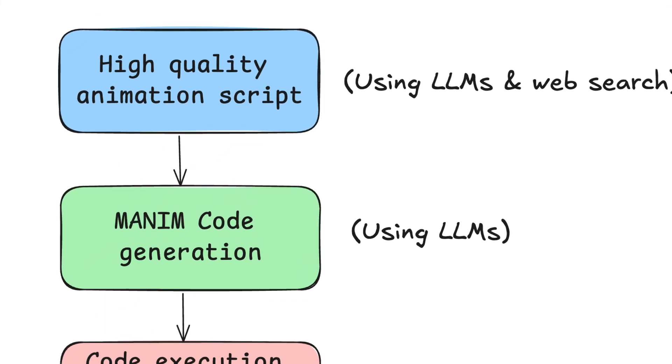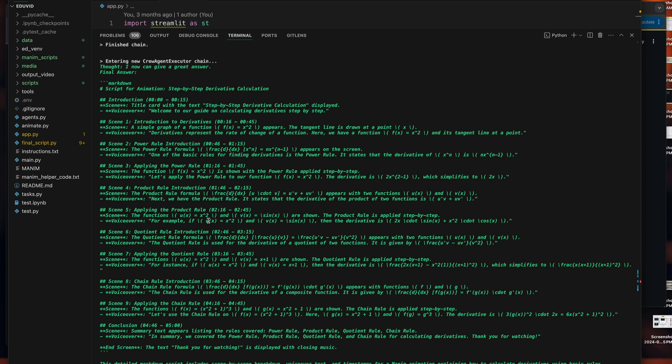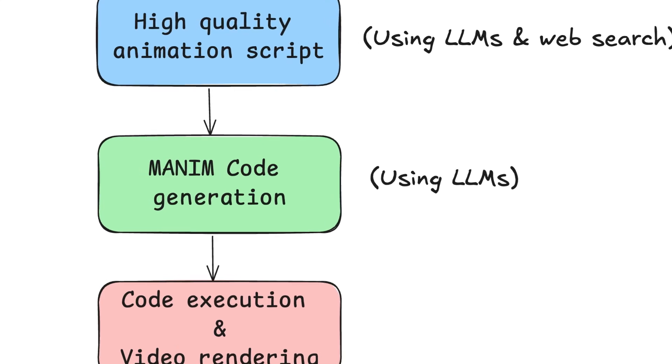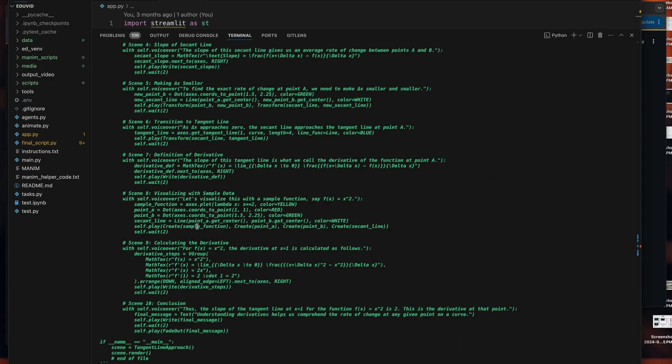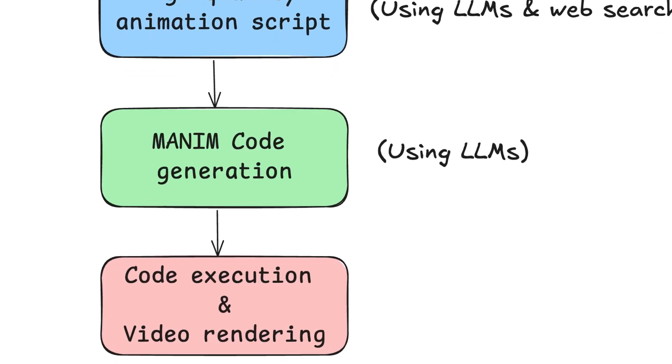For this app to create high quality educational videos I had to get three components right. First, writing correct and high quality animation scenes with voiceover. Second, generating the Manim code itself using LLMs. And finally, the third component: executing that code and rendering the video.